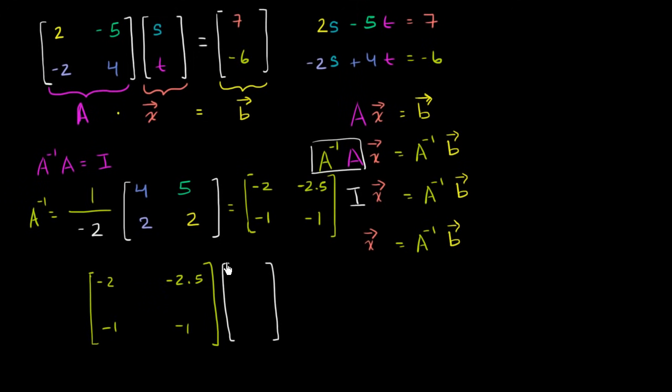Times, I'll just write them all in white here now. Seven, negative six, we've had a lot of practice multiplying matrices. So what is this going to be equal to? So the first entry is going to be negative two times seven, which is negative fourteen, plus negative two point five times negative six. So let's see, that's going to be positive, that's going to be twelve plus another three, so it's going to be plus fifteen.